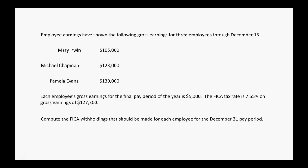Now the example problem. Employee earnings have shown the following gross earnings for three employees through December 15th: Mary Irwin has made $105,000, Michael Chapman $123,000, and Pamela Evans $130,000 so far. Each employee's gross earnings for the final pay period of the year is $5,000. The FICA tax rate is 7.65% on gross earnings up to $127,200. We need to compute the FICA withholdings for each employee during this December 31st pay period.